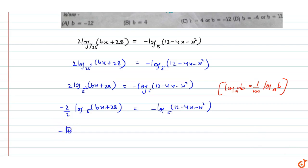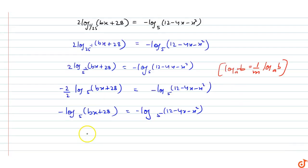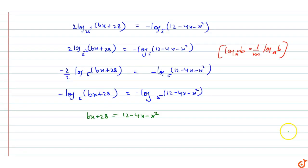Since both sides have the same base, we equate the arguments: Bx + 28 equals 12 minus 4x minus x squared. Rearranging, we get x squared + 4x + Bx + 28 minus 12 equals 0.